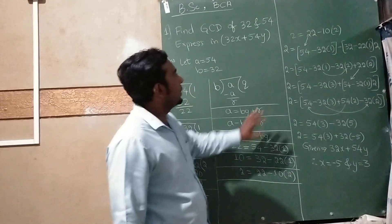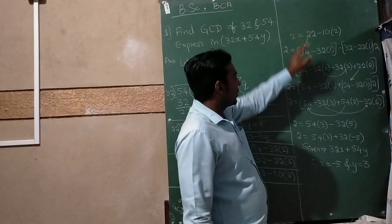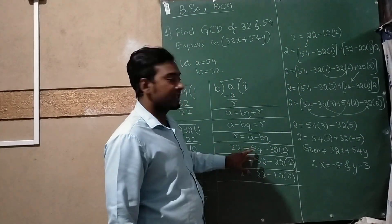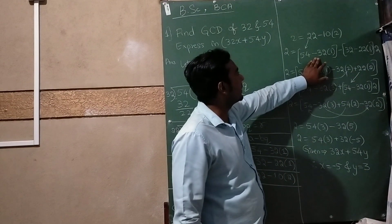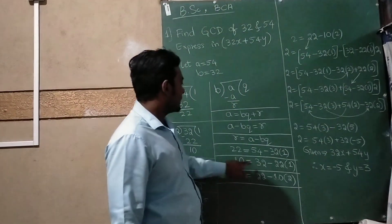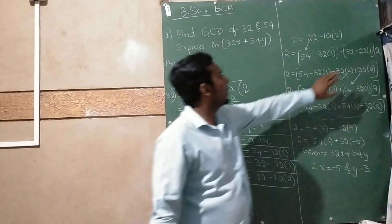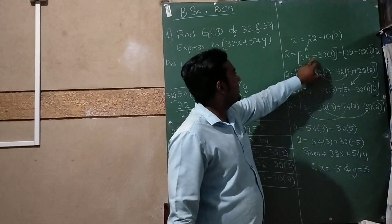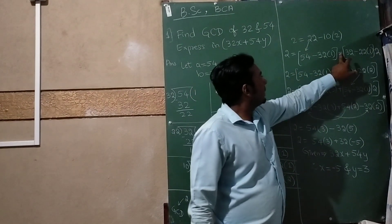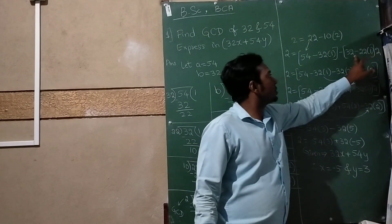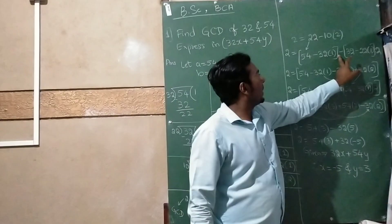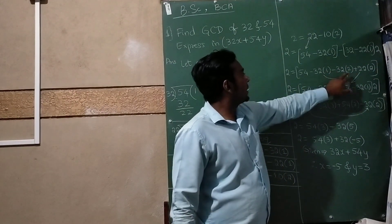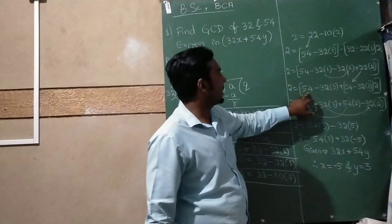Taking the last equation to solve for x and y: 2 equals 22 minus 10 times 2. But 22 is 54 minus 32 times 1, and 10 is 32 minus 22 times 1, so with the 2 outside, I have 2 equals 54 minus 32 times 1 minus 2 times bracket 32 minus 22. Taking the minus inside and multiplying by 2: 32 in bracket 2, minus times minus becomes plus 22 times 2.